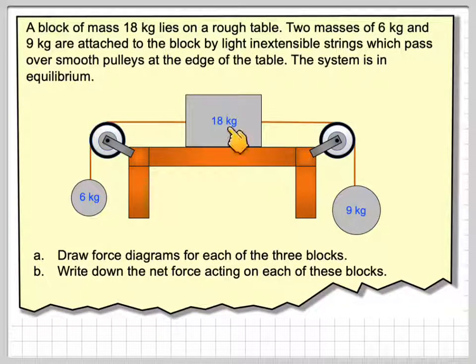It's either static or it is moving at a constant velocity. So what we've got is two pulleys. We've got an 18 kilogram mass. This end is attached with a 6 kilogram mass. At this end, it's attached with a 9 kilogram mass.